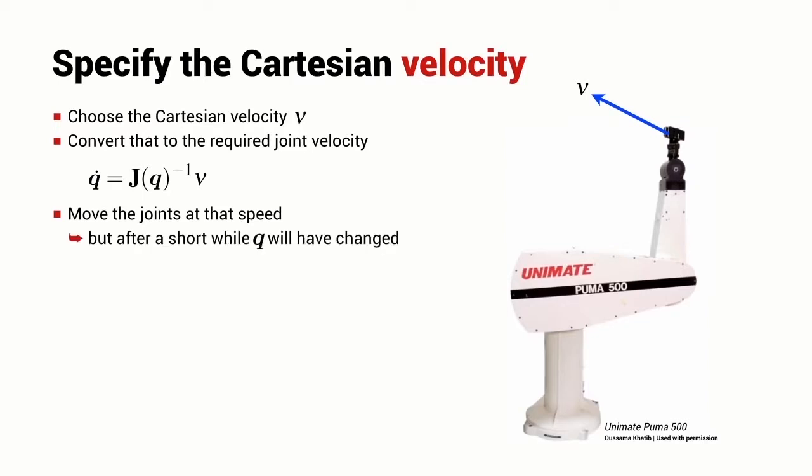Now, the problem is that because the robot joint angles are changing, after a short while, the Jacobian will be no longer appropriate because the Jacobian is a function of the joint angles. So I will need to recompute the Jacobian matrix.